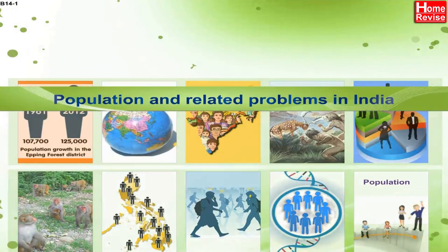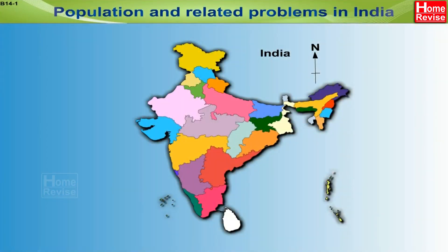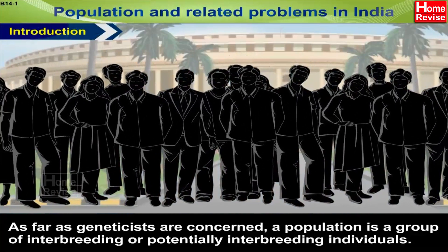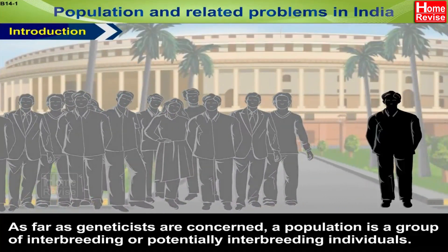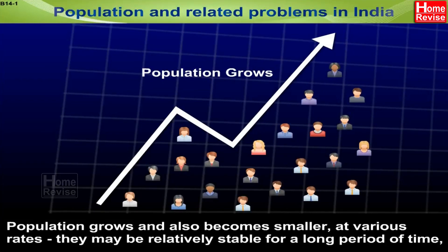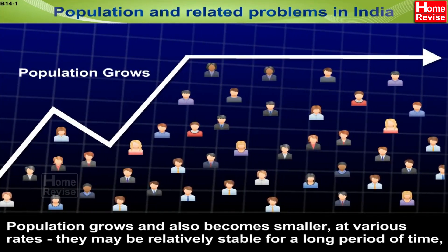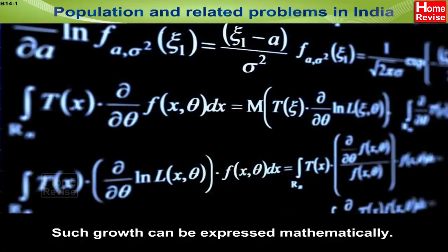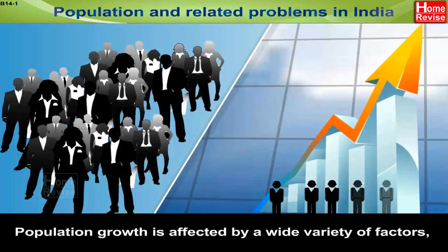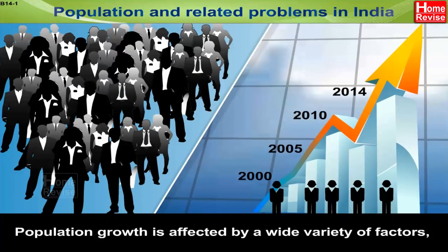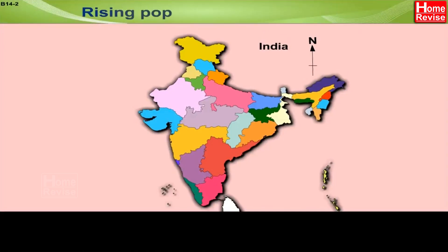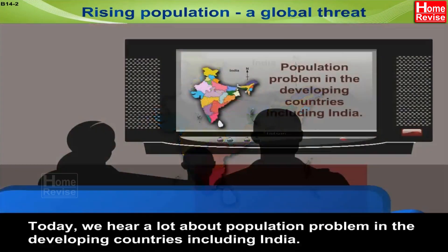Population and related problems in India — Introduction. As far as geneticists are concerned, a population is a group of interbreeding or potentially interbreeding individuals. Populations grow and also become smaller at various rates; they may be relatively stable for a long period, grow rapidly or slowly, or become extinct. Such growth can be expressed mathematically. Population growth is affected by a wide variety of factors, and as a result, the maximum possible rate of growth is rarely achieved.